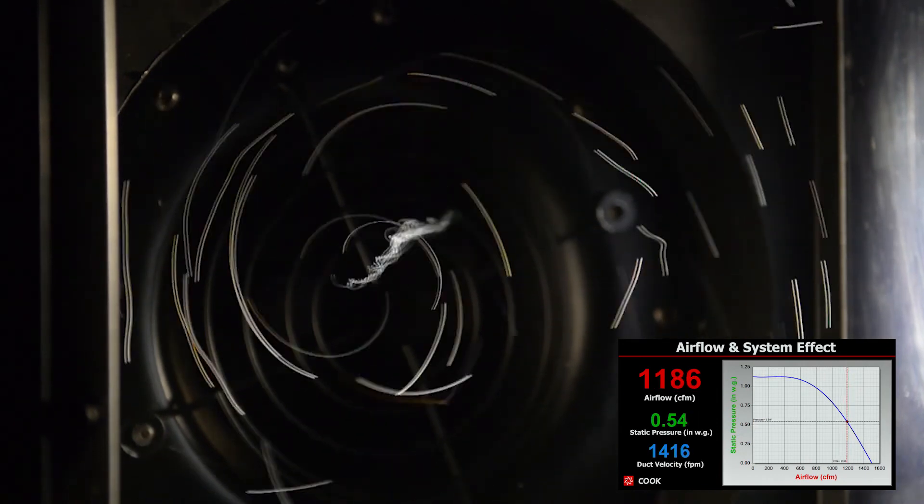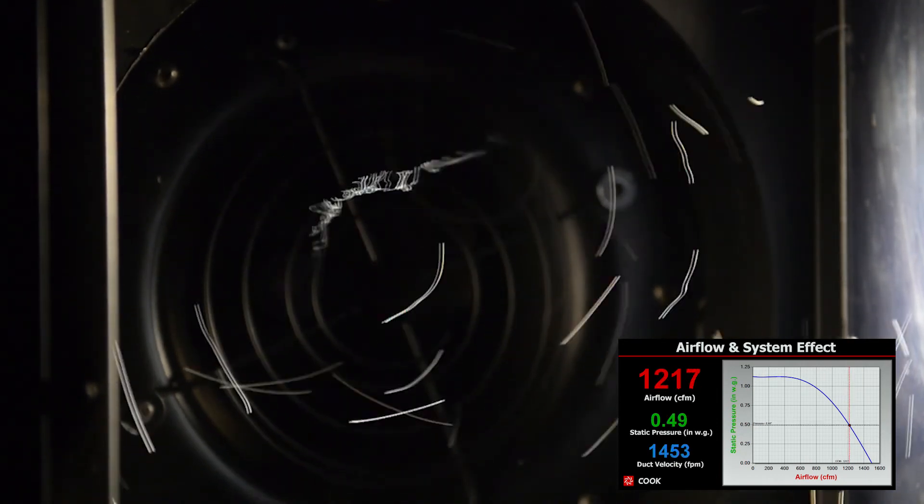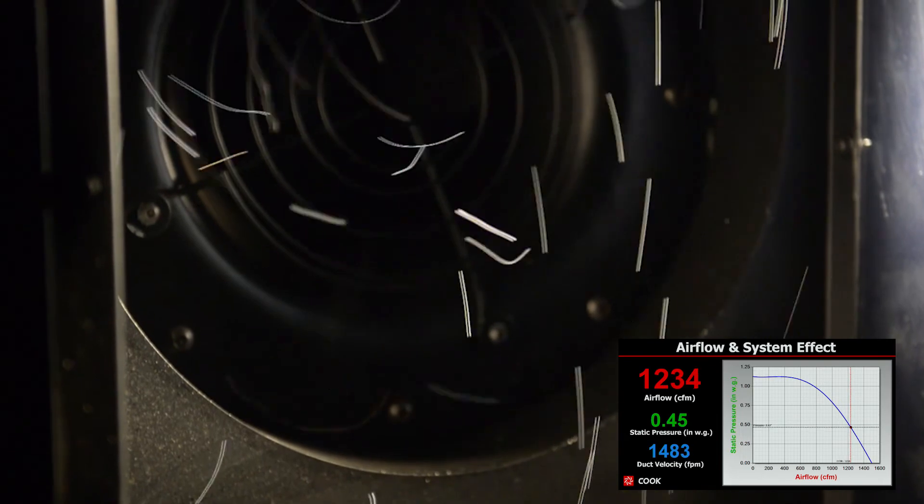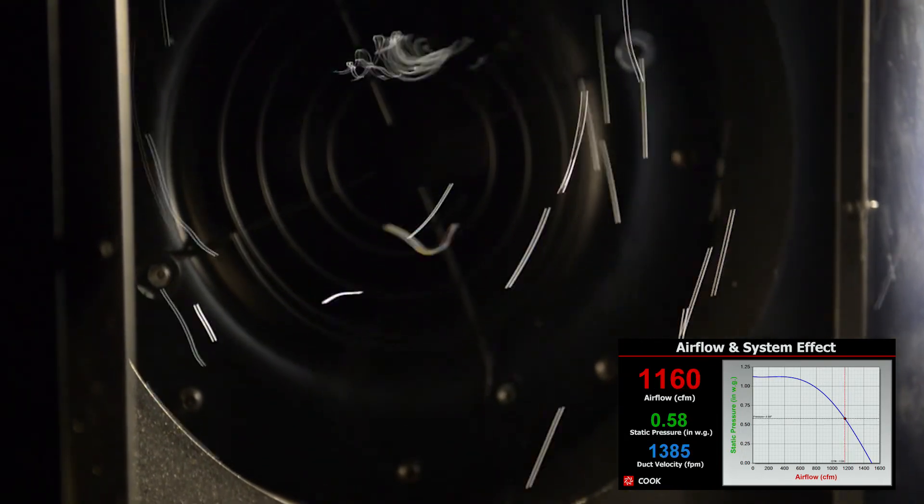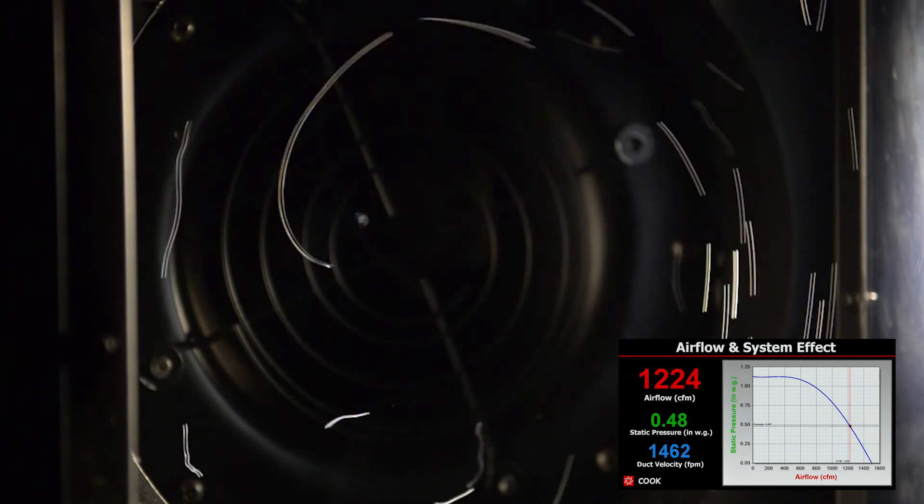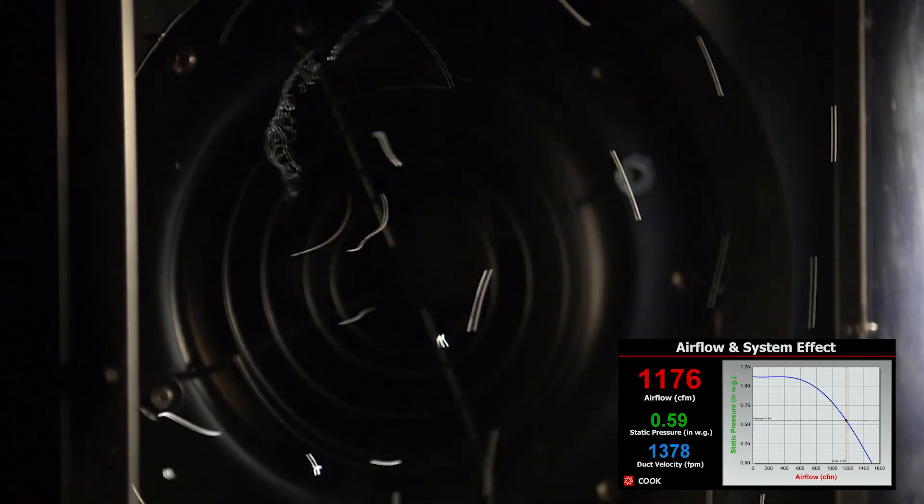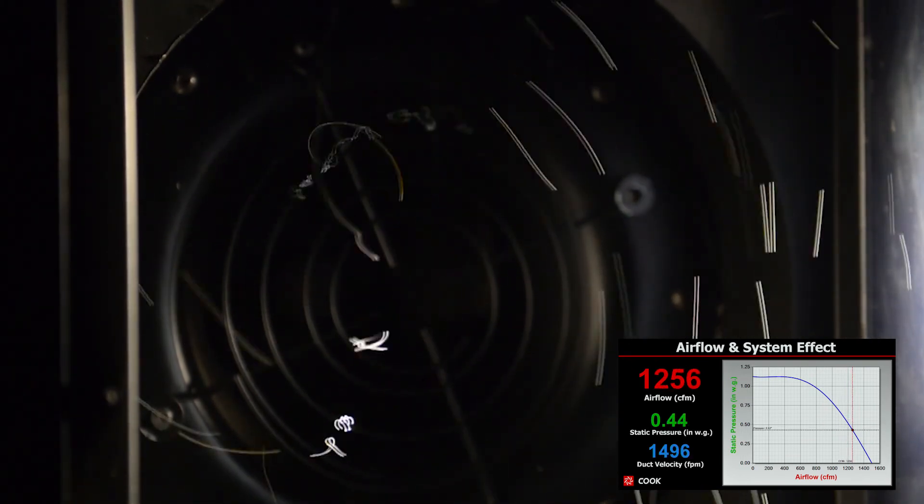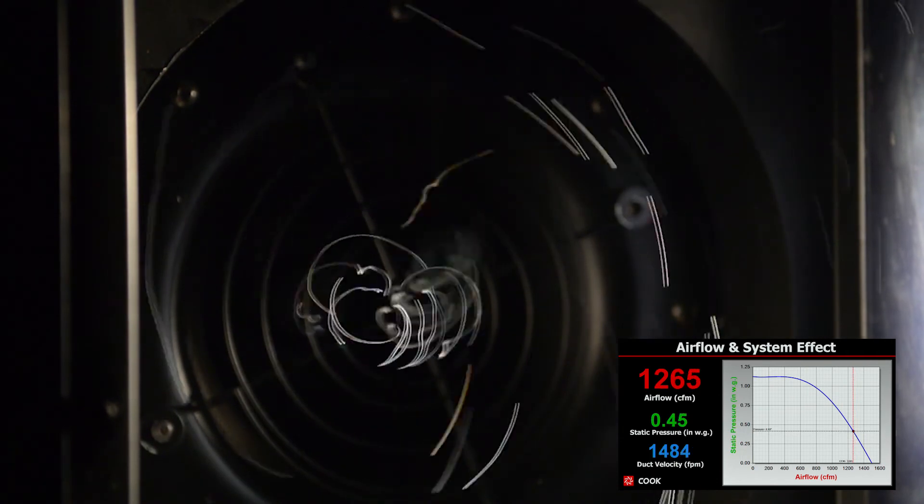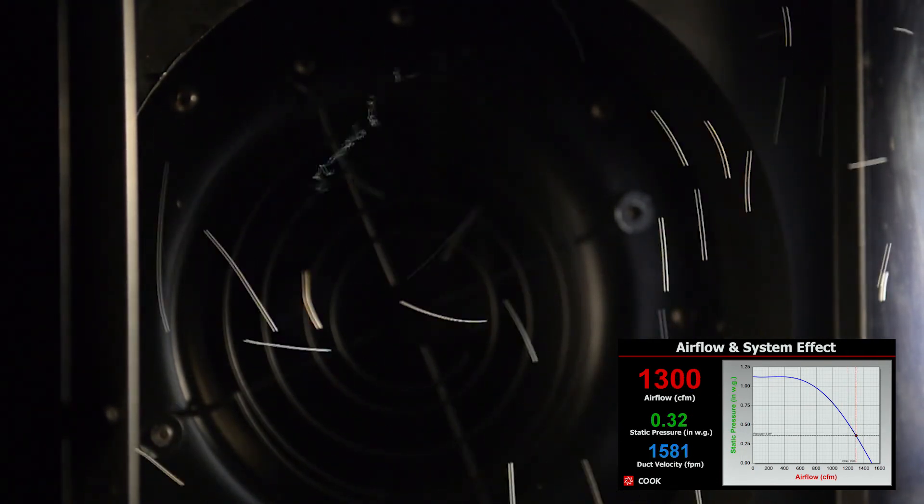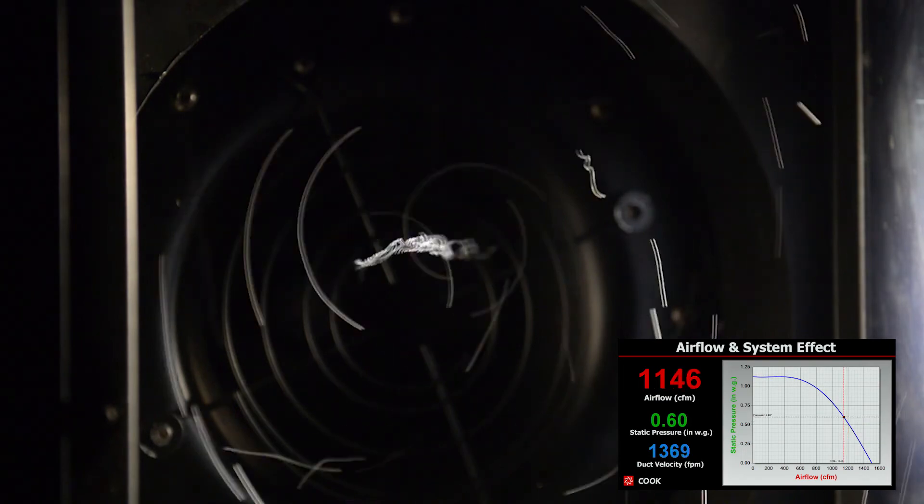We can also see the pressure loss swinging wildly with the changing airflow patterns. When the airflow is spinning in the direction of the fan rotation, the pressure drops, and when it is rotating opposite the fan, the pressure rises. Surging unstable airflow with a wildly varying pressure is not ideal. So what can we do to fix the problem?